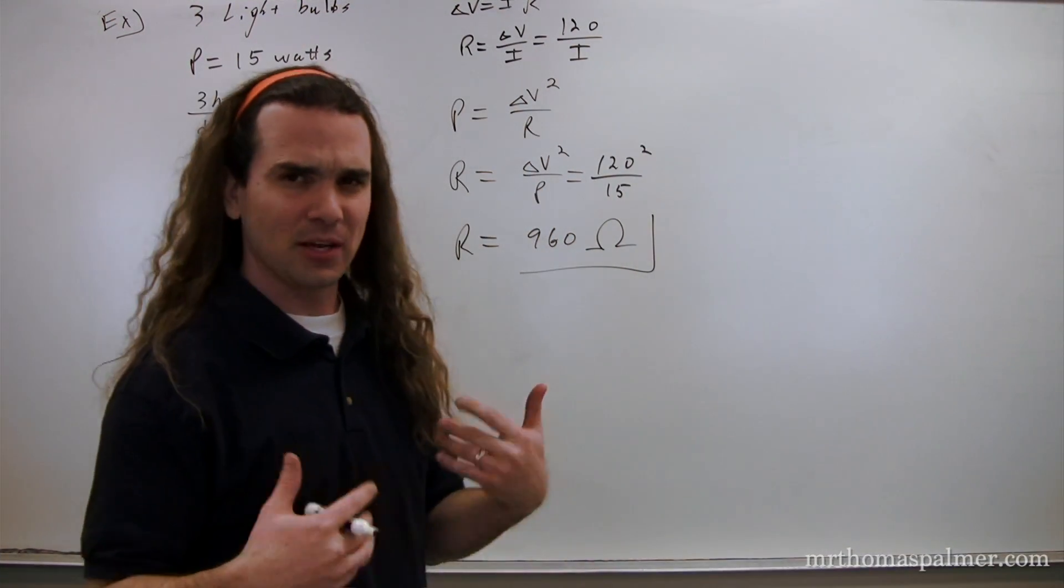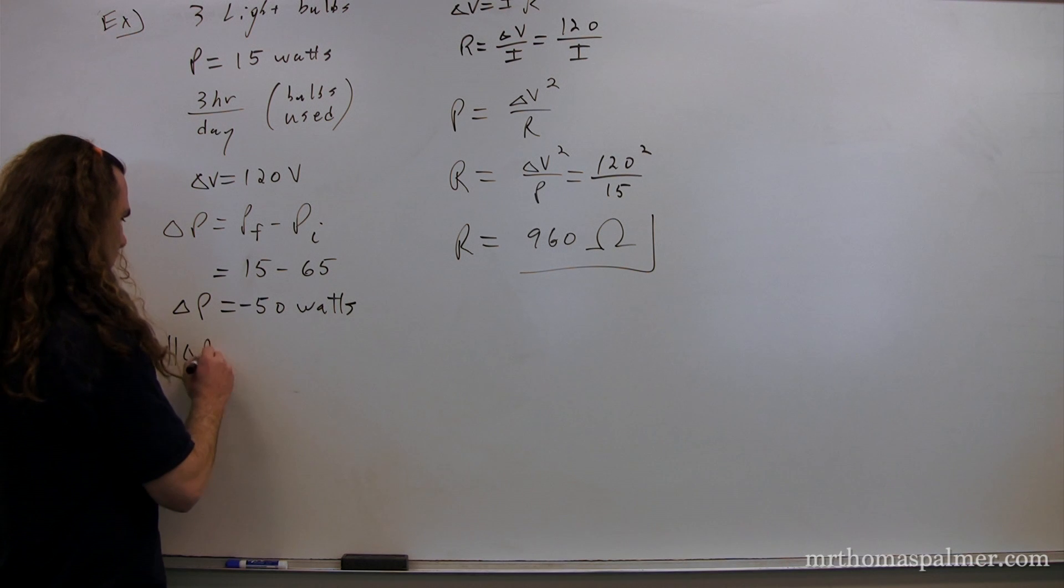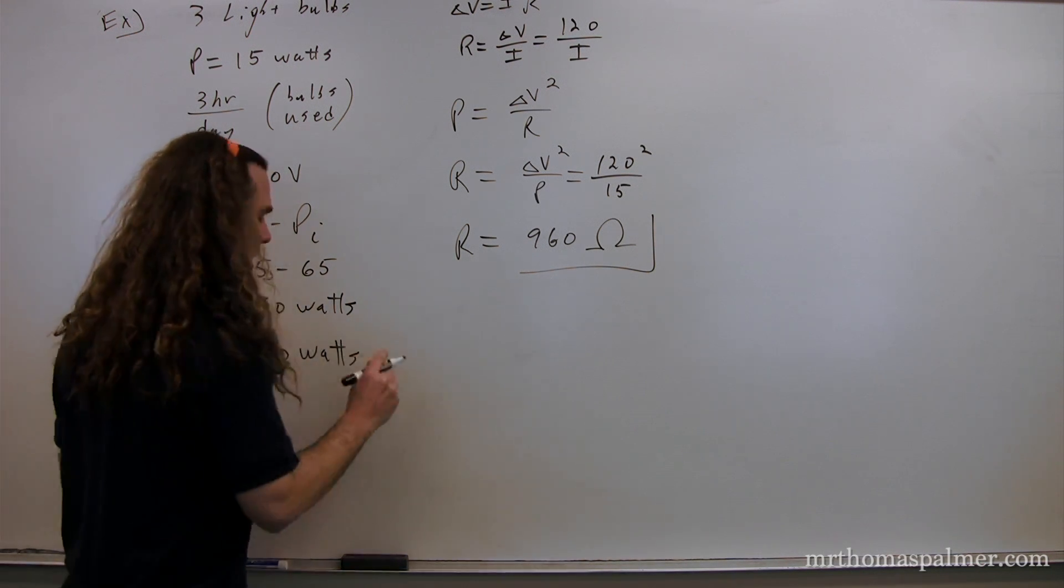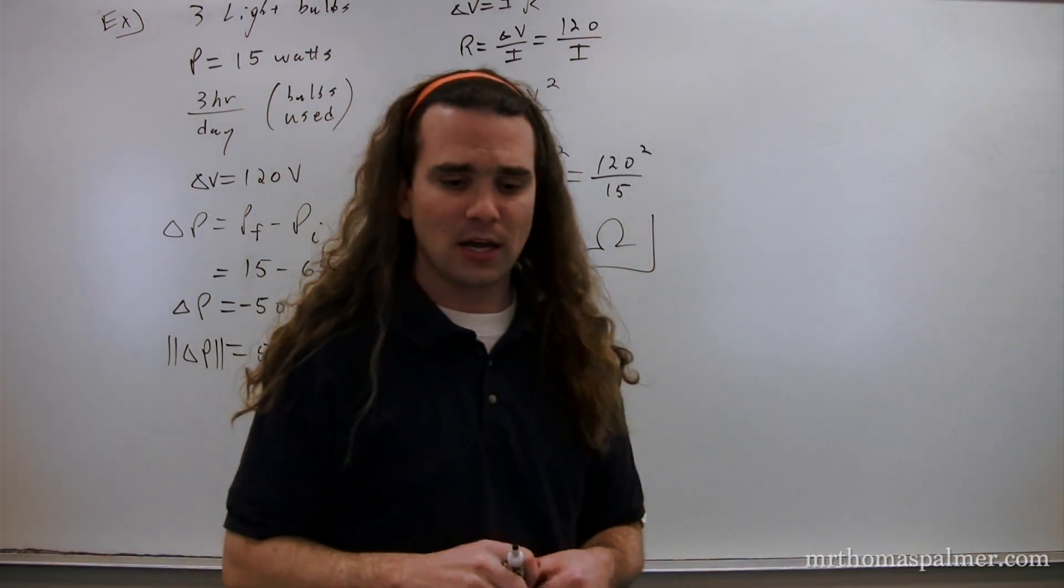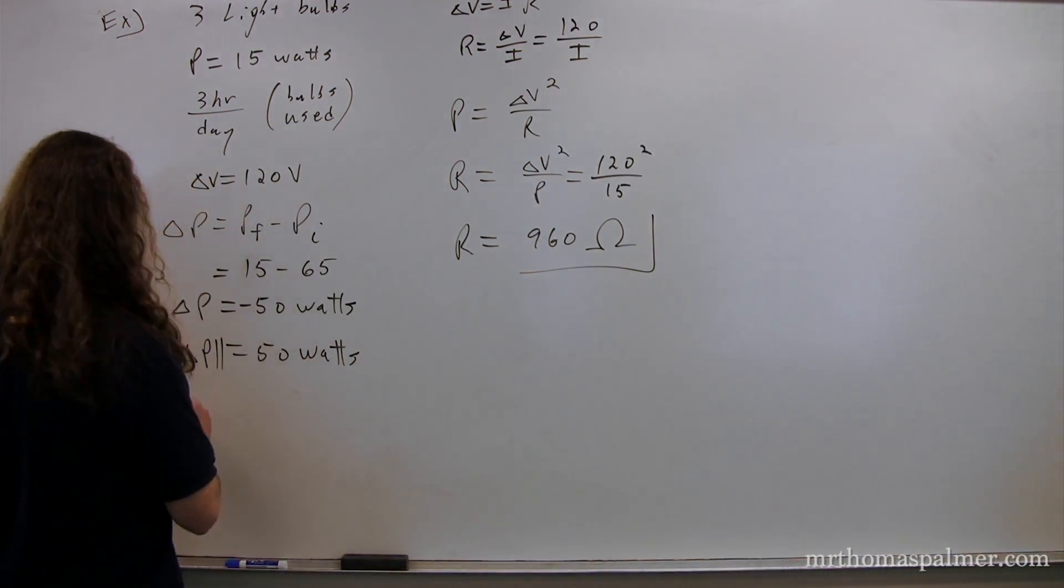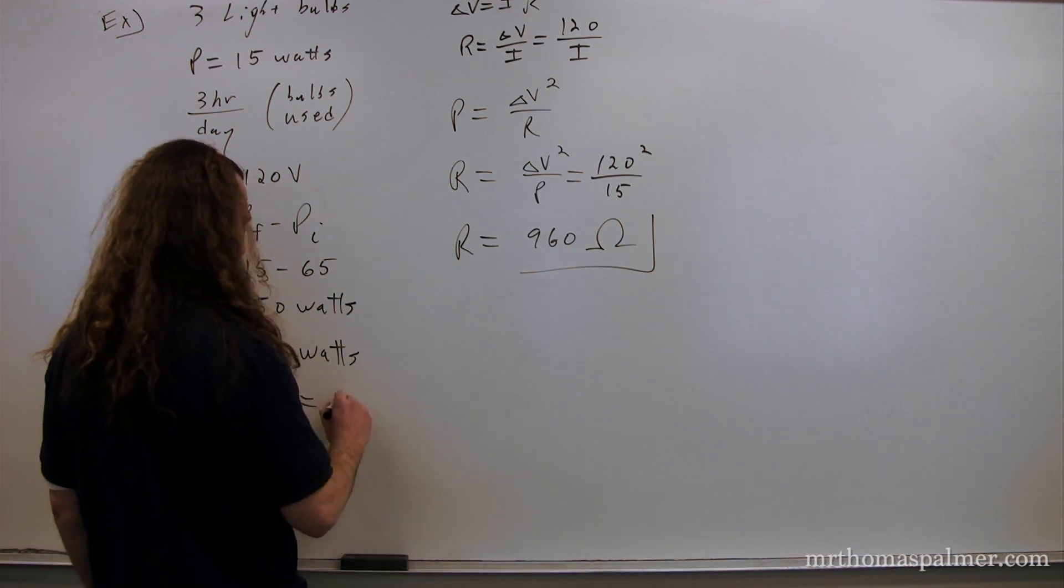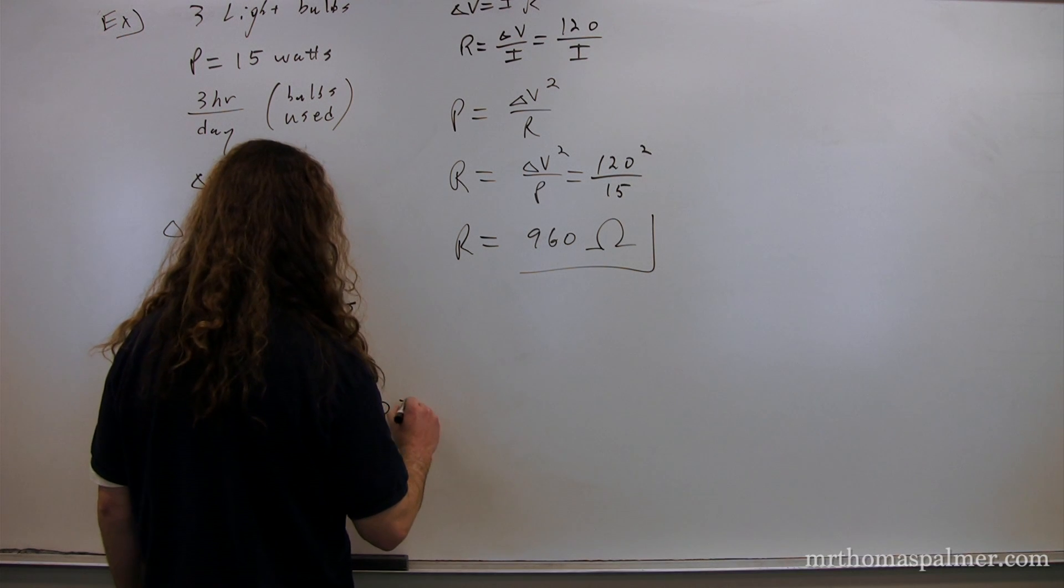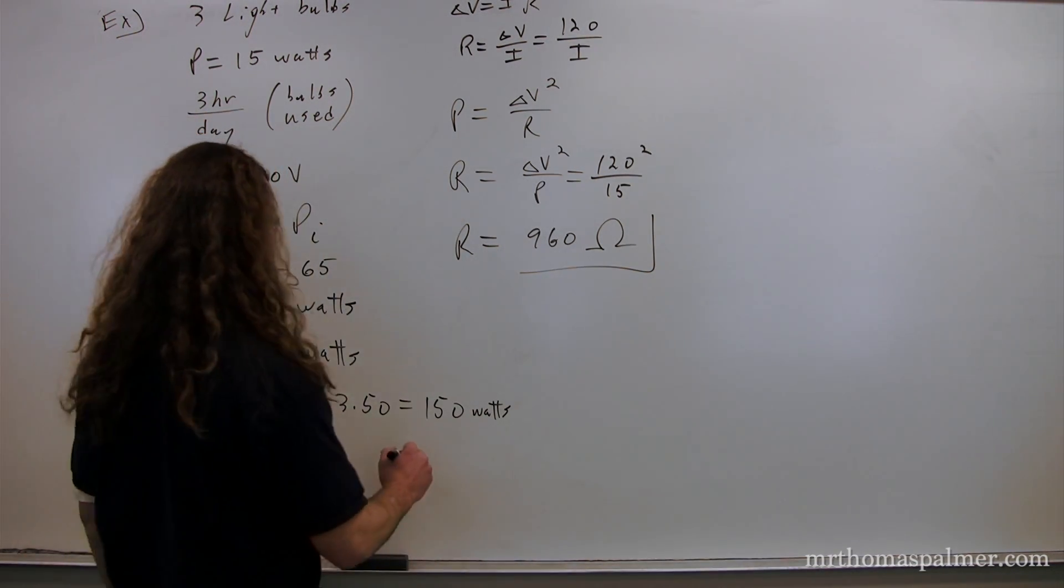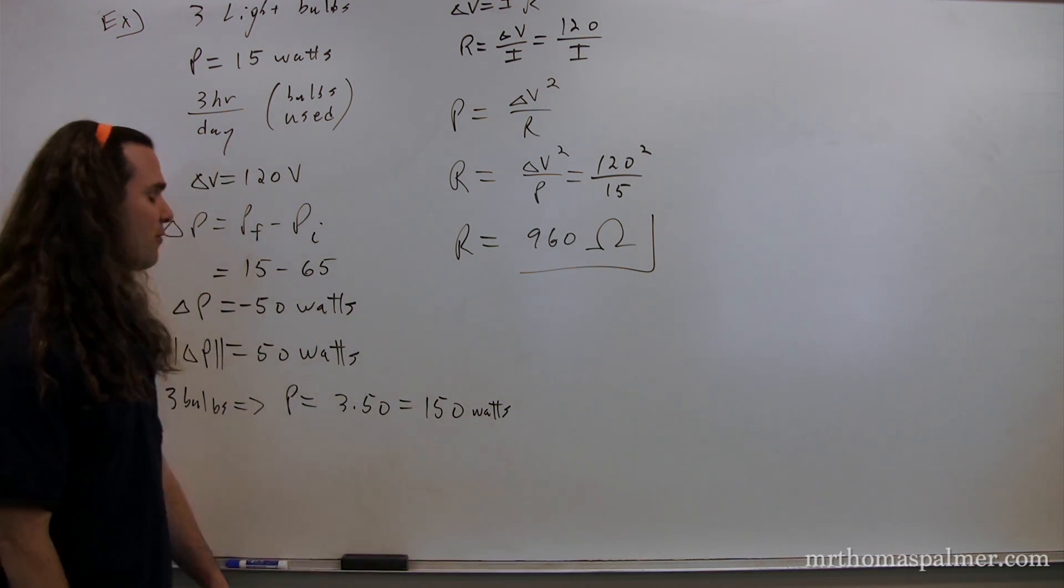At this point, we're going to actually drop the negative because we know it's going to be money saved. So, we're just going to take the absolute value of the change in power. That's going to be equal to 50 watts. And we have three bulbs, so we're actually going to multiply that number by three. So, three bulbs means that the power is going to be equal to 3 times 50 or 150 watts. This is the power for three bulbs. This is the power that we save for three bulbs.